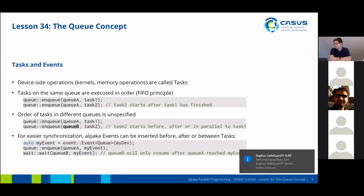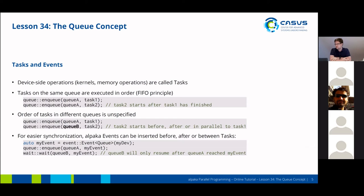Device-side operations — meaning kernels or memory operations — are called tasks. Tasks on the same queue are executed in order, following the FIFO principle, so if we launch two tasks on the same queue, task 1 will be completed before task 2 starts. However, if we use multiple queues, the order of tasks is not specified. If we enqueue task 1 to queue A and task 2 to queue B, task 2 may start before, after, or parallel to task 1.